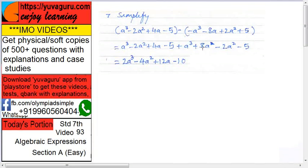Here, plus 8a. Here, minus 2a². Here, minus 5. Right? First, understand every step. Then only go ahead. Otherwise, pause this video and watch this again.